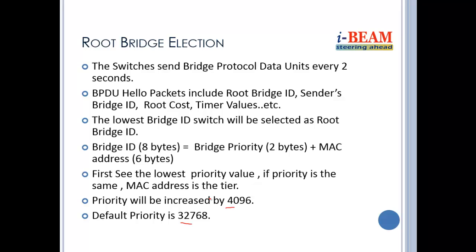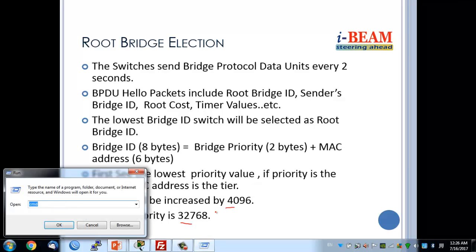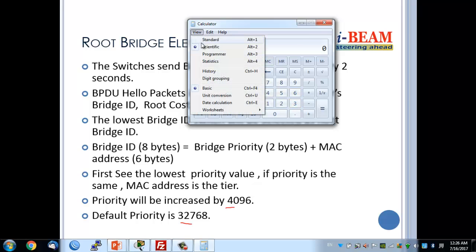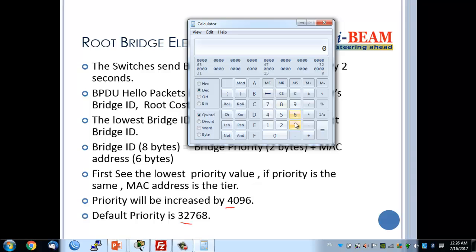Let's convert to hexadecimal. The value 32768 in hexadecimal is 0x8000. And the value 4096 in hexadecimal is 0x1000.